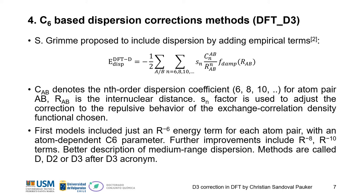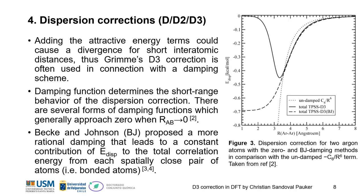These methods are called D1, D2, or D3 after the DFT-D acronym. But adding these attractive energy terms could cause a divergence for short interatomic distances. Thus, the Grimme D3 correction is often used in connection with a damping scheme. This damping function determines the short-range behavior of the dispersion correction.